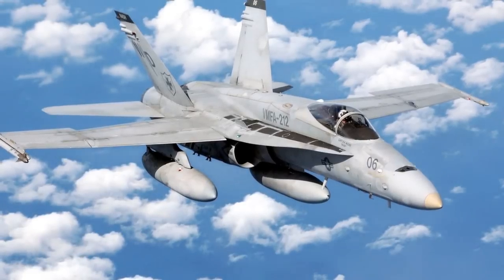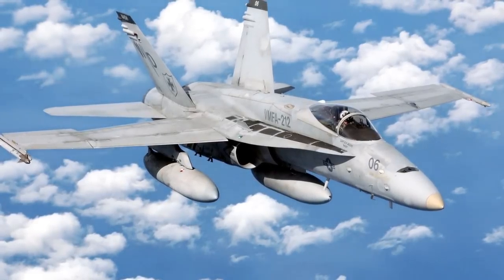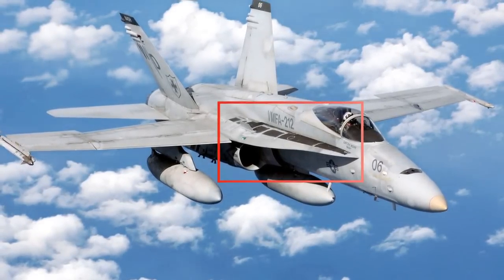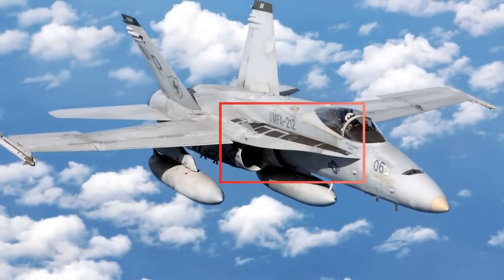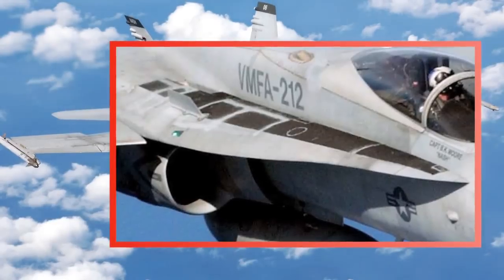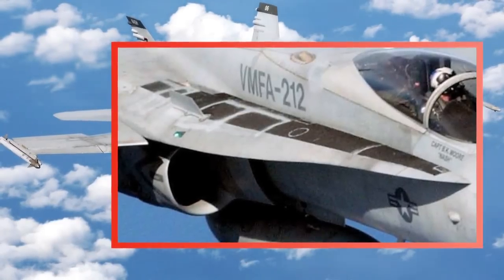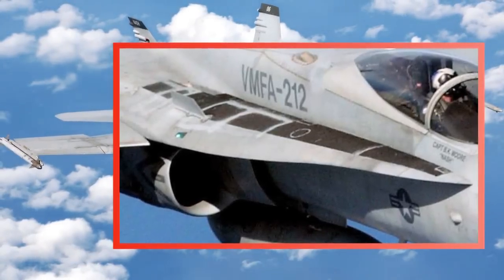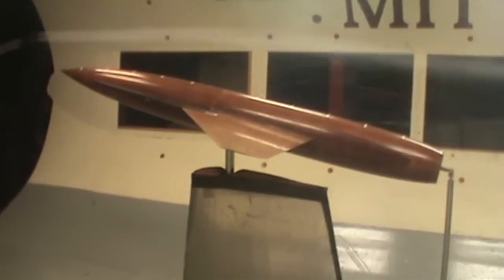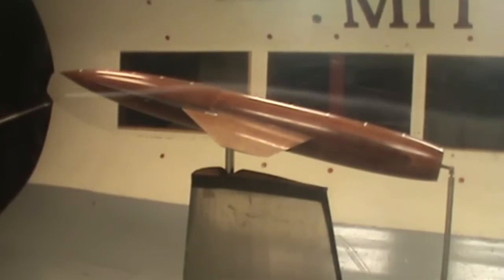This is an F/A-18 Hornet fighter jet. Look here — there are forward extensions of the wing called leading edge strakes, or leading edge extensions. Why were the wings designed this way? In this video, you'll find out.